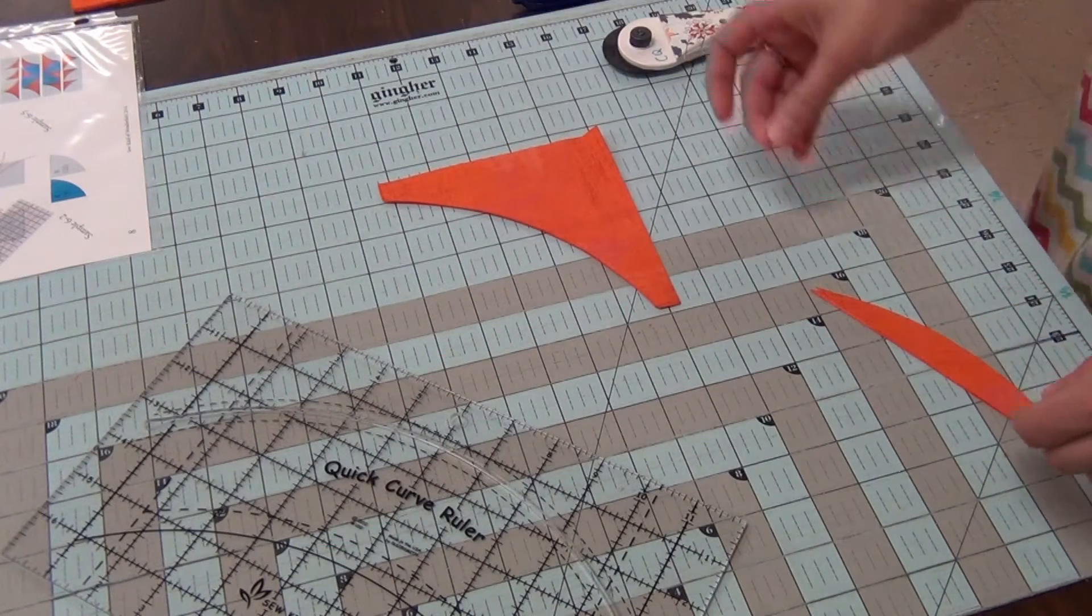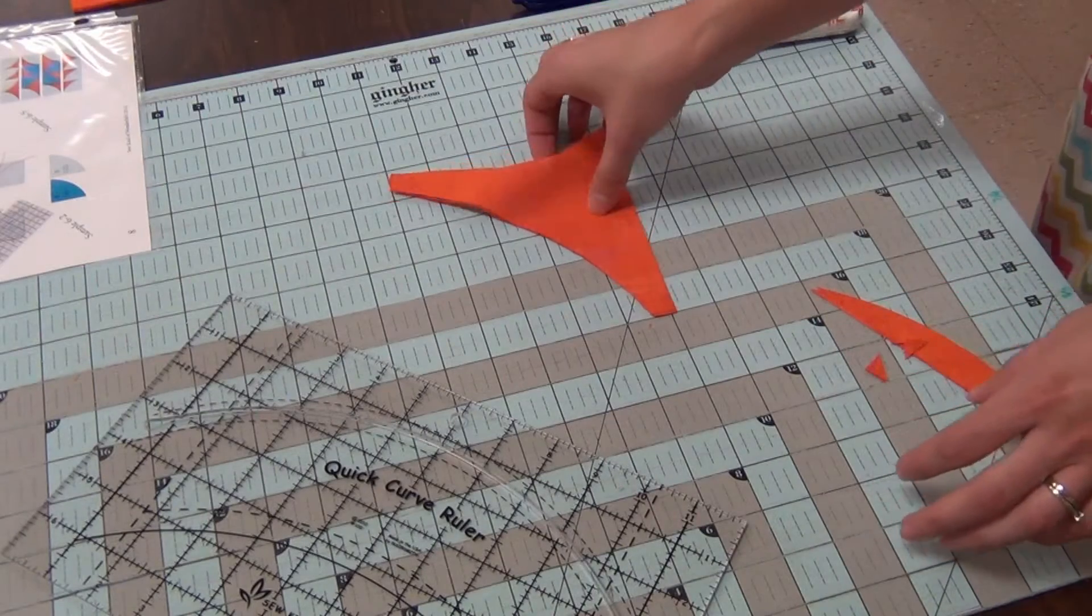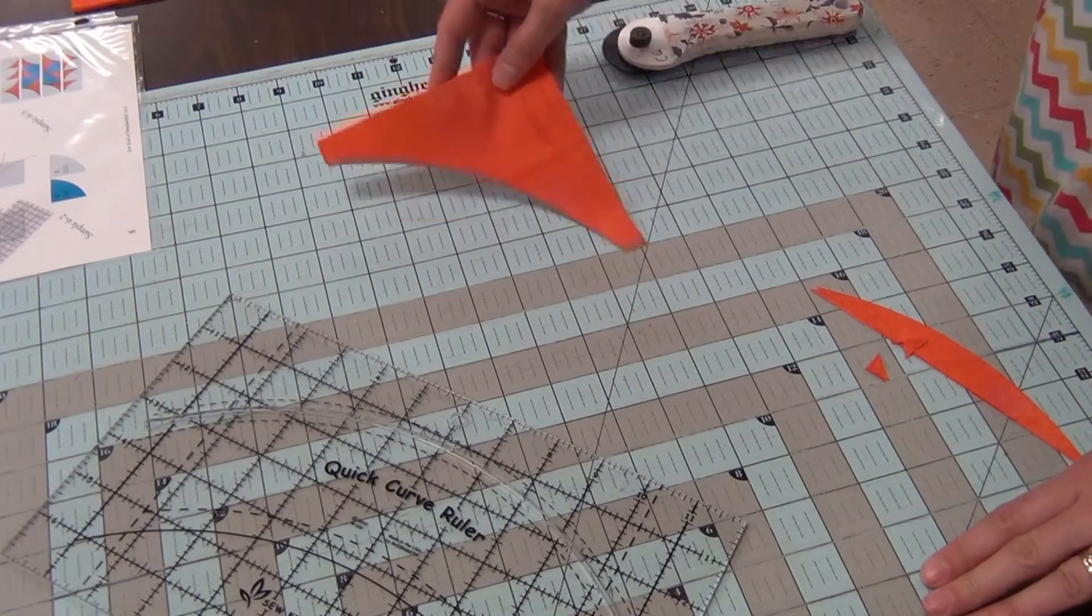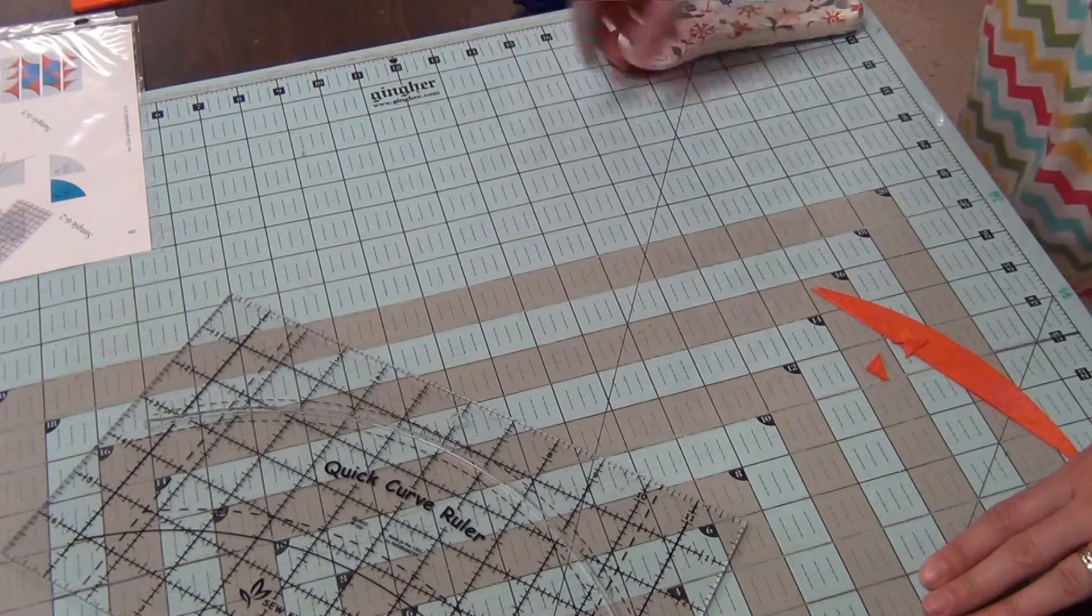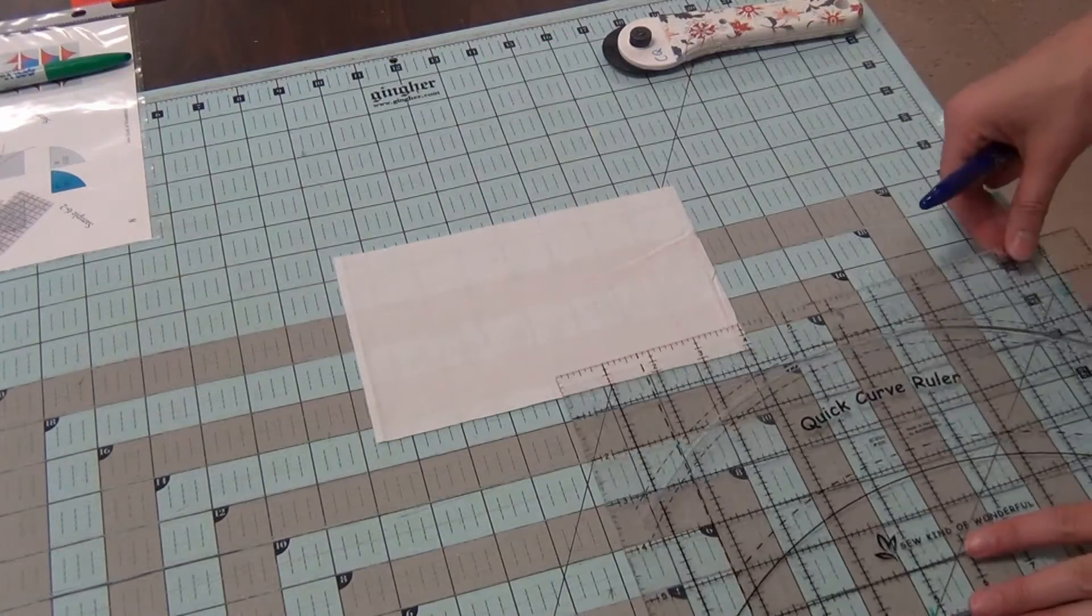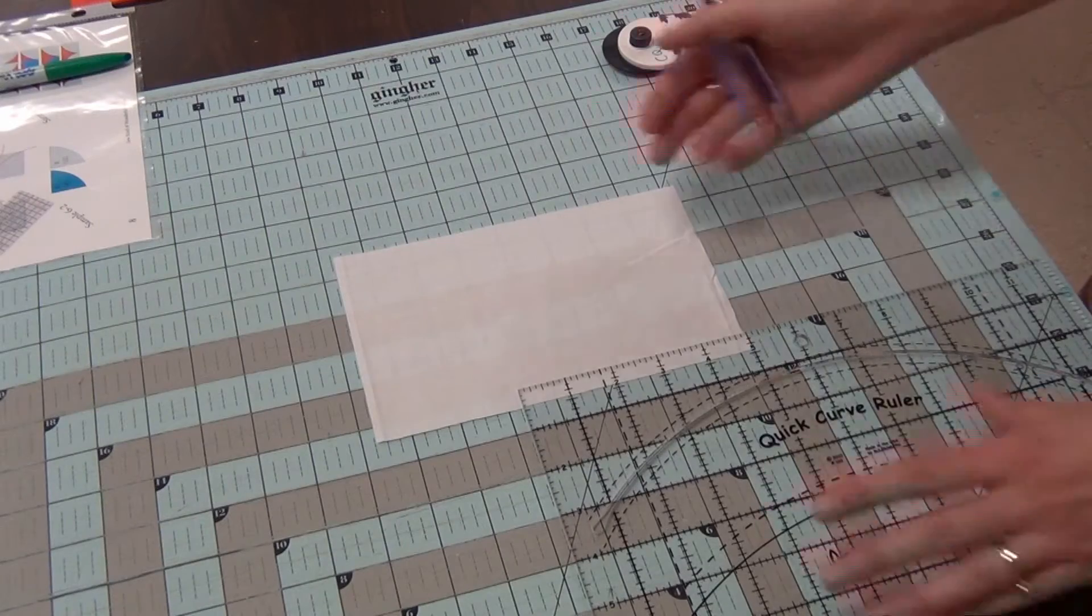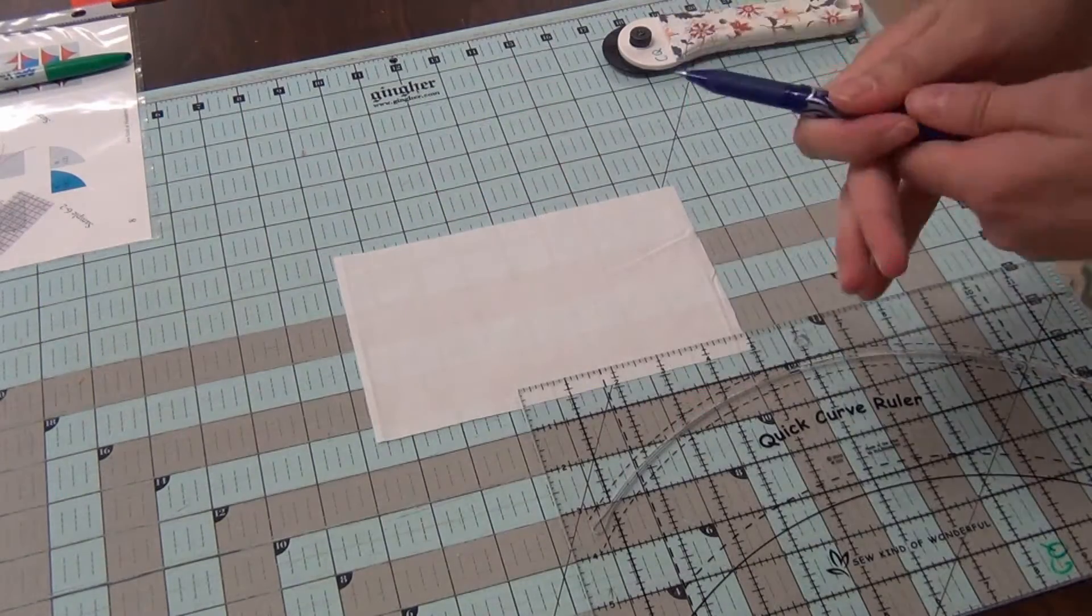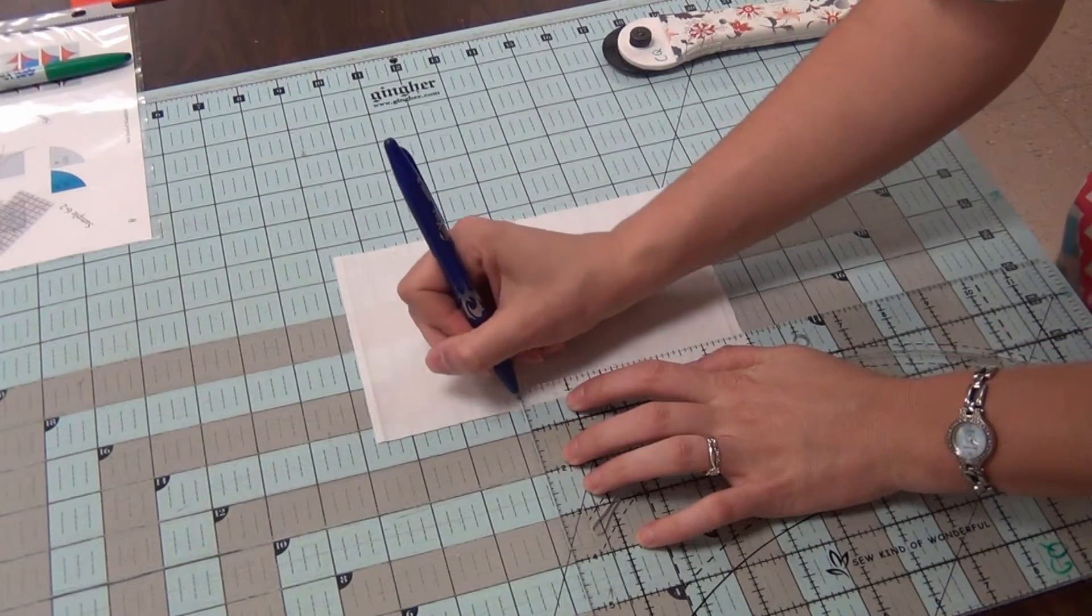It's going to be sewn together with the background and with some of our piece B. Now to cut our background fabrics, I'm going to measure five inches and mark a little line on each side here.